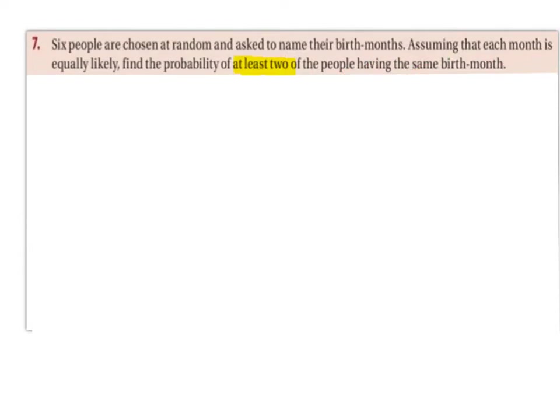So the phrase 'at least' — if we hear the phrases 'at least' or 'at most' in a probability question, we want to think of using the success and failure method. If we wanted to find the probability of at least two people having the same birth month, that would mean two, three, four, five, or six people having the same birth month, and that would take a long time to work out. So it's much easier to find the failure and then subtract that from one.